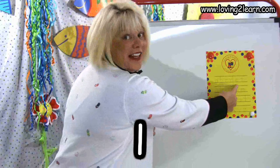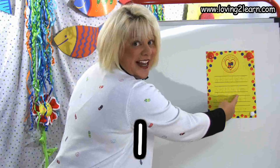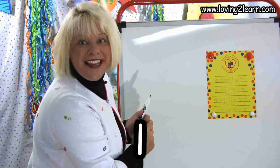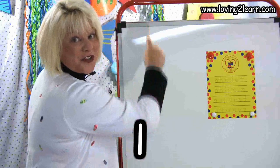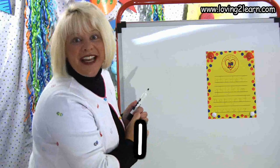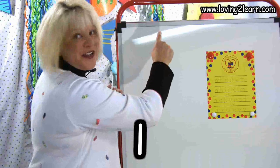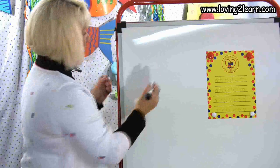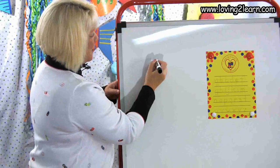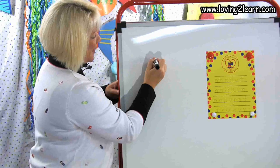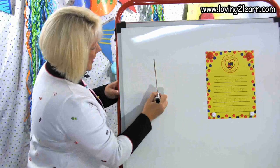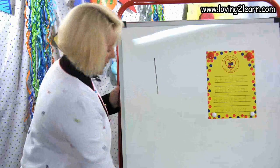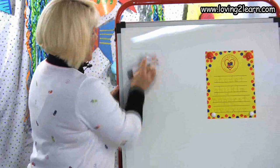The next letter is the letter L. L is a straight line down. Do it with me in the air: straight line down. We'll do it on the wipe-off board: straight line down. There's the letter L.